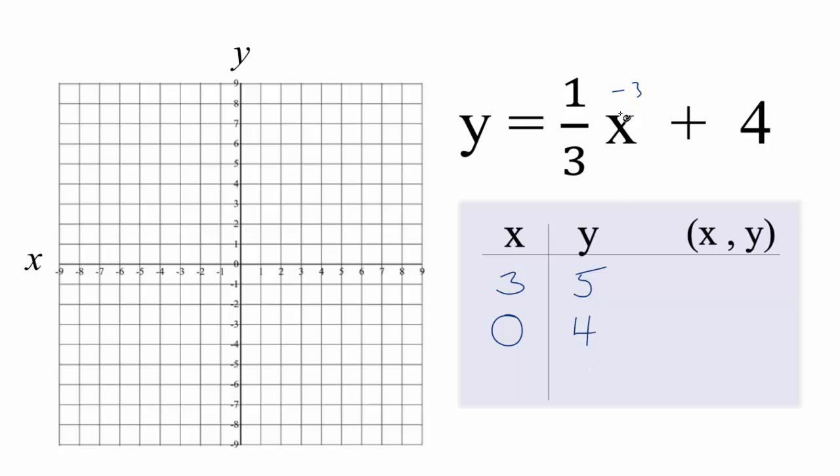And let's put negative three in. One-third times negative three, that's negative one. Negative one plus four is three.